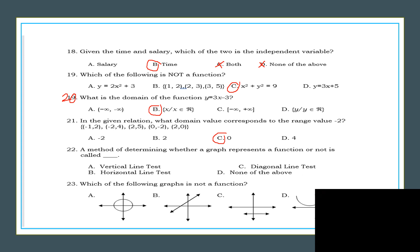And a method of determining whether a graph represents a function or not is called a vertical line test. Okay, so let's do this. Among these graphs here, which of the following graphs is not a function? Of course this is a function, B is a function, this is a function. The answer is letter A.